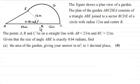The points A, B and C lie on a straight line with AB being 23 metres and BC being 12 metres. Given the size of angle ABE is 0.64 radians, you've got to find the area of the garden. Give your answer in square metres to one decimal place for four marks.